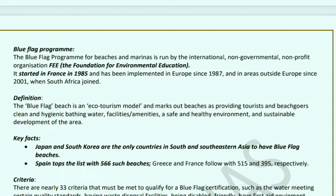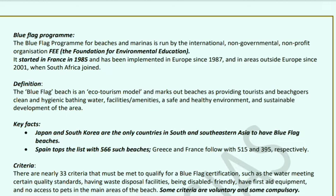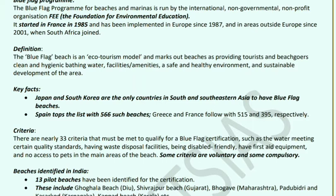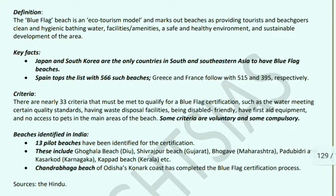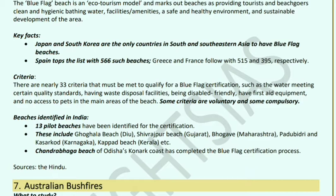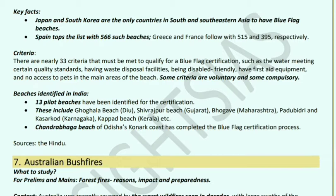The Blue Flag program for beaches and marinas is run by the Foundation for Environment Education (FEE), an international non-governmental non-profit organization. It started in France in 1985, was implemented in Europe in 1987, and expanded outside Europe in 2001 when South Africa joined. Blue Flag beach is an eco-tourism model that marks beaches as providing tourists and beachgoers clean and hygienic bathing water facilities, amenities, a safe and healthy environment, and sustainable development. Japan and South Korea are the two countries in South and South-East Asia with Blue Flag beaches. Spain tops with 566 beaches, followed by Greece with 515, and France with 395.